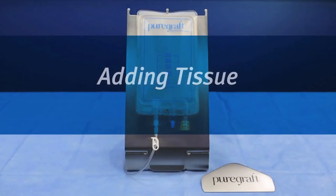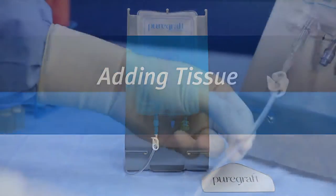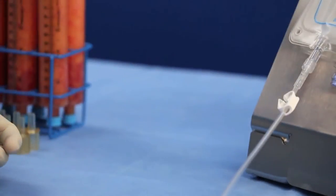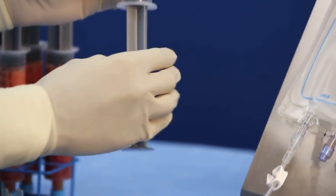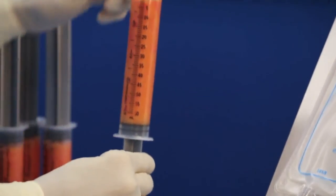Tissue is added to the PureGraft through the tissue port. Adding and extracting tissue through the inlet port using a luer lock syringe increases the risk of clogging and is not recommended.